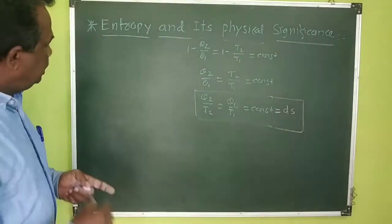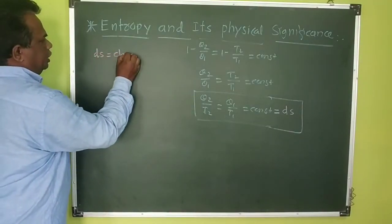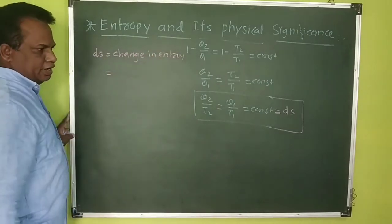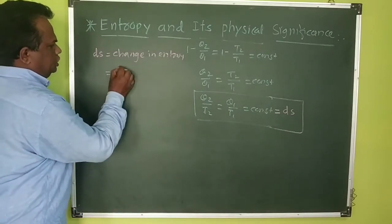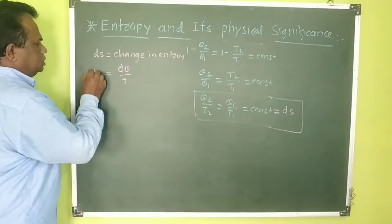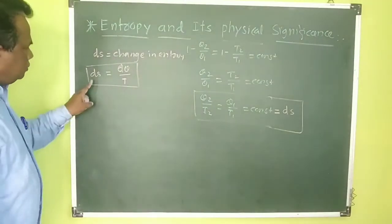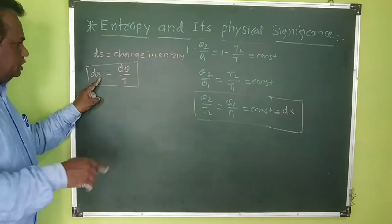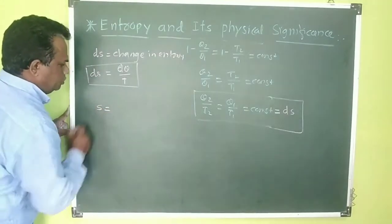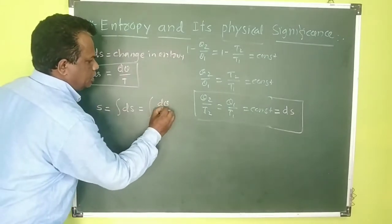The change in entropy, dS, is defined as the ratio of heat energy dQ divided by temperature T. This relation is known as the definition of entropy. S is entropy, dS is the change in entropy. To find the total entropy change, S equals the integral of dS, which equals the integral of dQ divided by T.